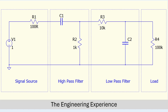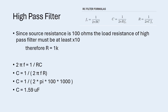Firstly we will be doing the high pass filter section. For the high pass filter we can use the formula on the screen now: the cutoff frequency is equal to 1 divided by 2πRC. We know the cutoff frequency is 100 hertz and we know the resistance is 1 kilo ohm. Rearranging the equation to get capacitance by itself, we plug in our numbers: C is equal to 1 over 2π times 100 hertz times 1 kilo ohm. We get a capacitance value of 1.59 microfarads.